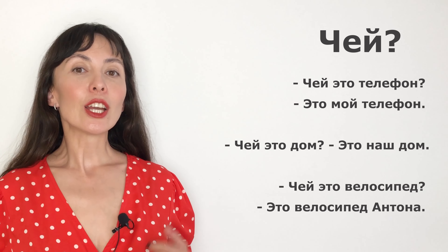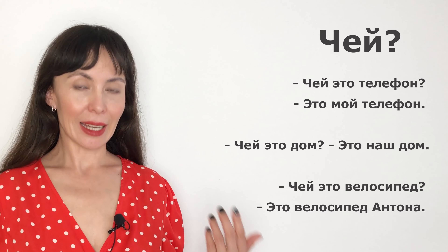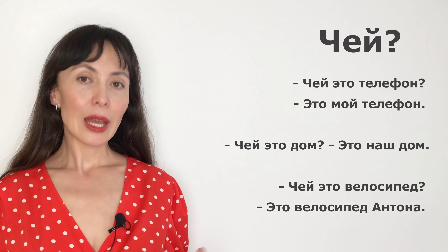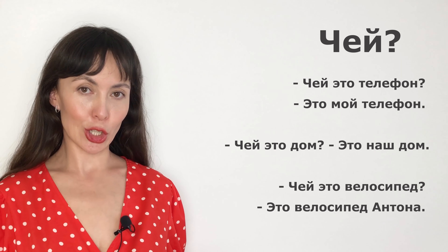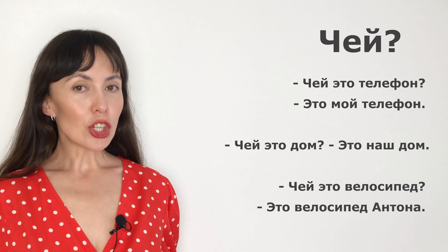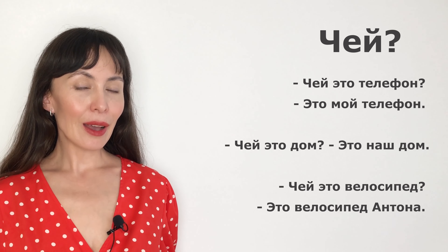For example: Чей это телефон? — Whose cell phone is this? Это мой телефон. Чей это дом? — Whose house is this? It's our house. Чей это велосипед?